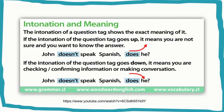For example: 'John doesn't speak Spanish, does he?' — said with rising intonation. With falling intonation, if the intonation of the question tag goes down, it means you are checking or confirming information, or making conversation. For example: 'John doesn't speak Spanish, does he?' — said with falling intonation.